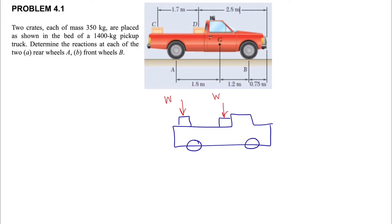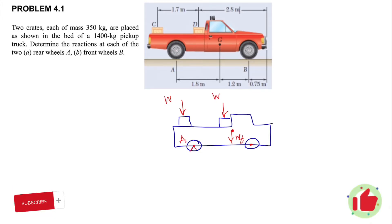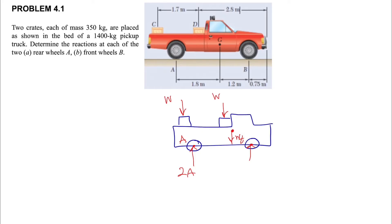As always, we start with the free body diagram. We have the weight of the two crates, shown as W, and the weight of the truck, shown as Wt. We have two reactions at the wheels — the reaction at the rear wheels called 2A, since there are two wheels in the back, and the front wheels called 2B.